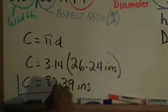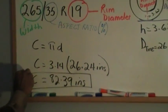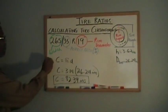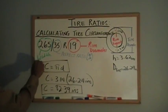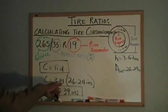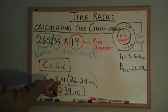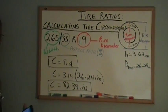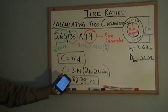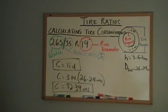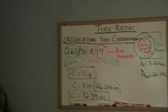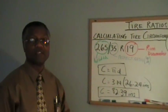For this particular tire, π D formula for my circumference. Plug information in: my π, I know π is 3.14, my diameter is 26.24. When I multiply it out, I get 82.39 inches circumference. Simply put, that's it.